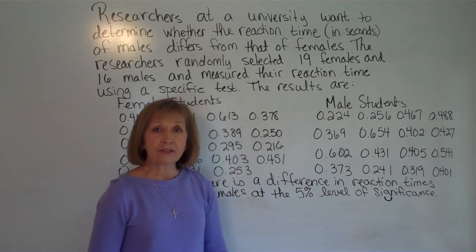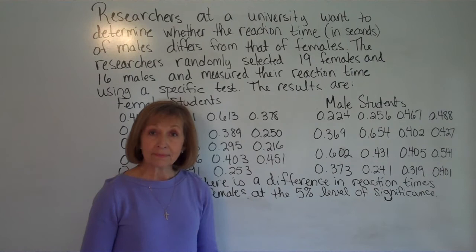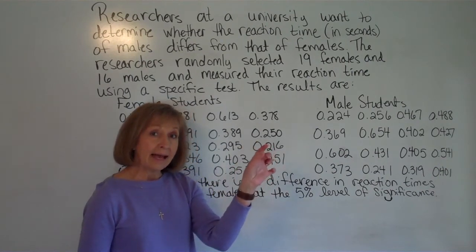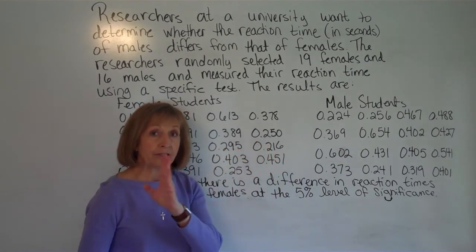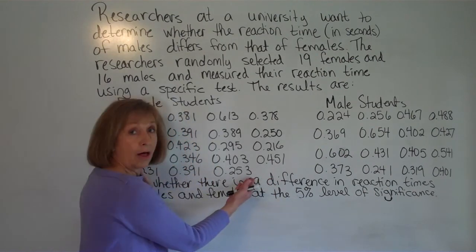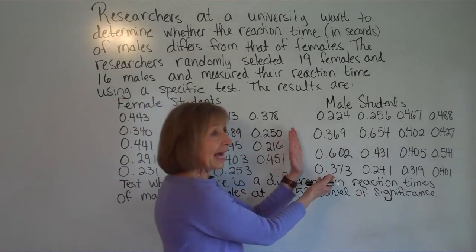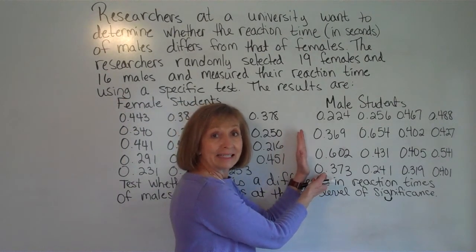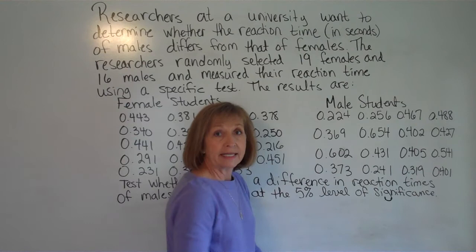And the first thing you want to do is you want to enter the data in your lists. So remember to do that on the calculator, you're going to push stat and then it'll highlight on edit and you just want to push enter and you're going to get list one, list two, list three, etc. So you want to put all these data values in list one and all the data values for the males in list two before we get started.